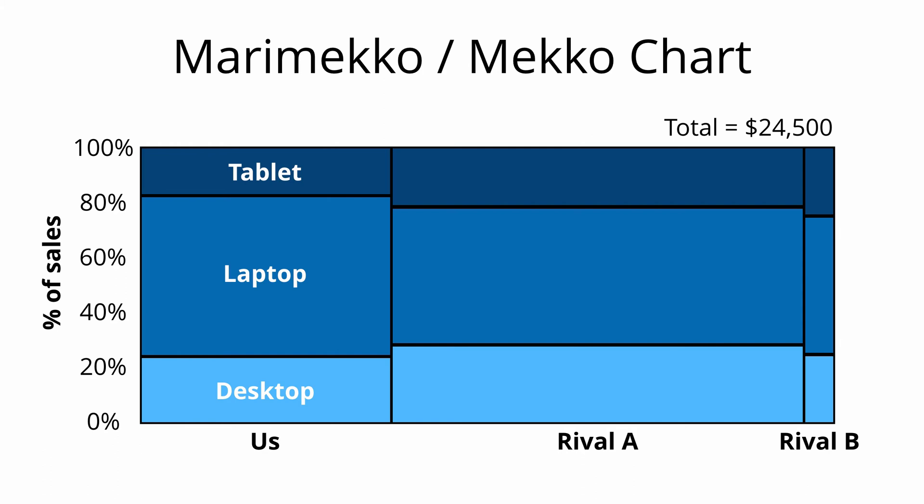The next chart is called the Marimekko or Meko chart. It adds yet another dimension of data and can be confusing for those who have never seen it before. The x-axis represents the different companies, the y-axis represents the percentage of total sales for that company, and the segments color-coded in dark blue, blue, and light blue represent the different products. The additional dimension is the width of the x-axis, which shows how large total sales are for us versus rival A versus rival B. The entire area of the full rectangle represents $24,500 of sales.